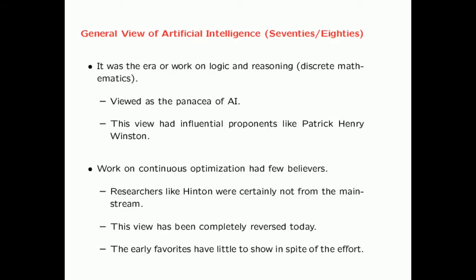This was generally consistent with the view of artificial intelligence in the 70s and 80s. This was the era of work on logic and reasoning — discrete mathematics — which was viewed as the panacea of AI. This view had influential proponents like Patrick Henry Winston. Work on continuous optimization and probability had very few believers. Well-known researchers like Hinton were certainly not considered mainstream at the time. This view has, of course, been completely reversed today, and the early favorites in logic and reasoning have little to show in spite of all the effort put into the field.